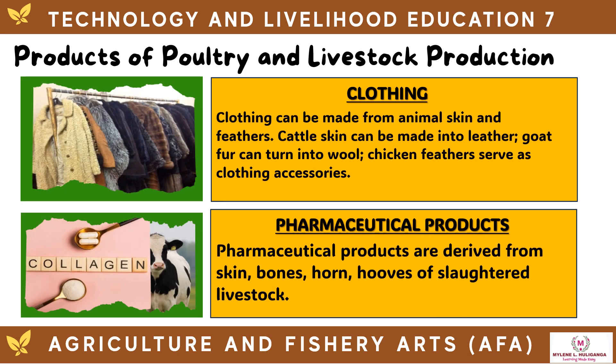Clothing can be made from animal skin and feathers. Cattle skin can be made into leather, goat fur can be turned into wool, and chicken feathers serve as clothing accessories. Pharmaceutical products are derived from the skin, bones, horns, and hooves of slaughtered livestock.